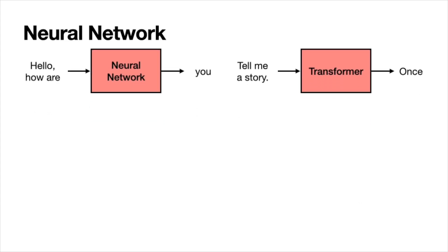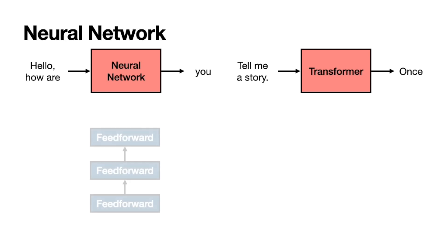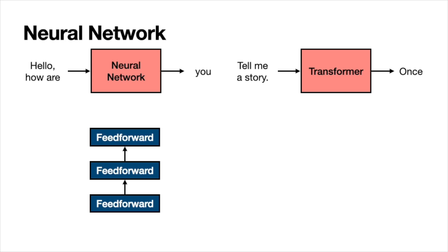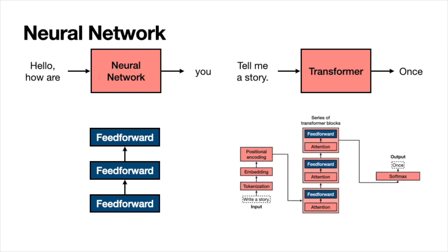First, let's look at the architecture. A neural network has a bunch of feed-forward layers where text is turned into numbers, processed one way, then processed again and again until a number or series of numbers comes out. A transformer is like a neural network but with a bunch of enhancements. This is how the architecture of a transformer looks — there are some feed-forward layers padded with other things like attention, positional encoding, etc.